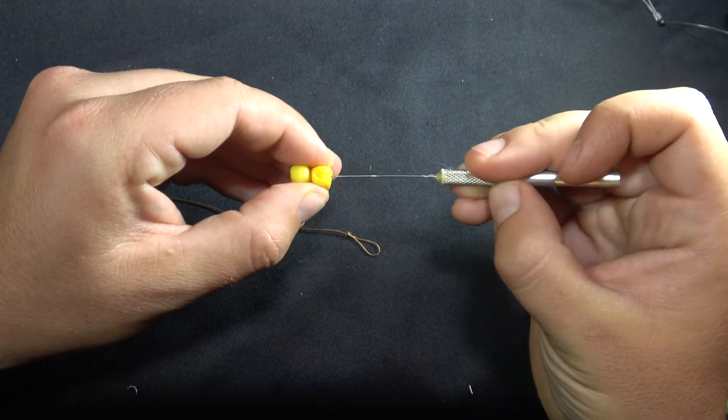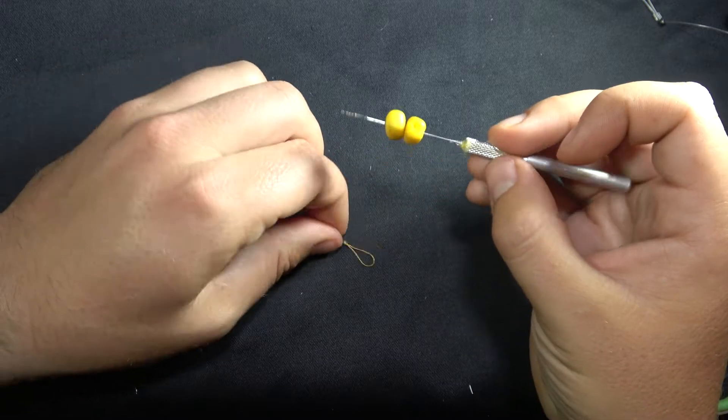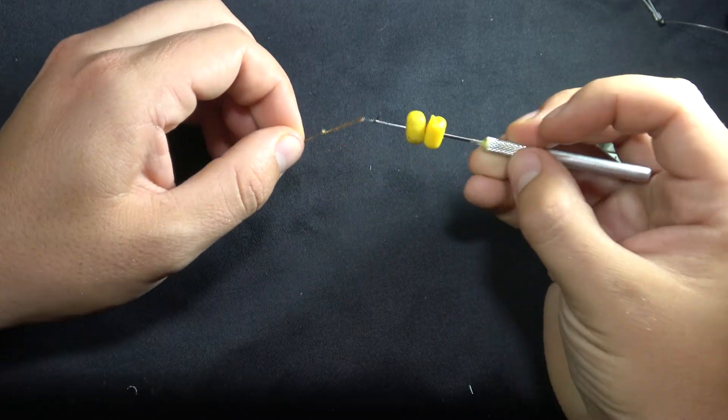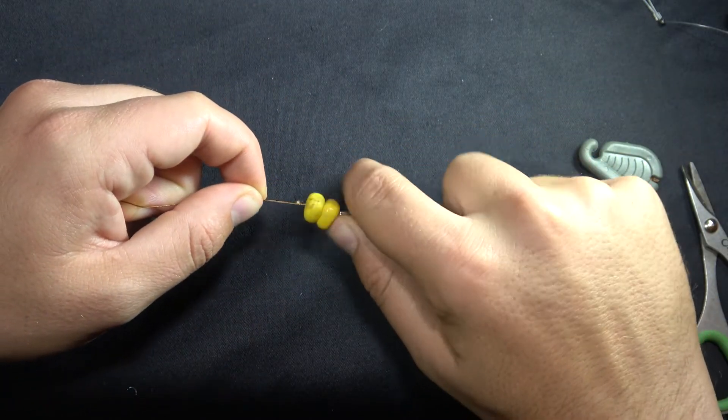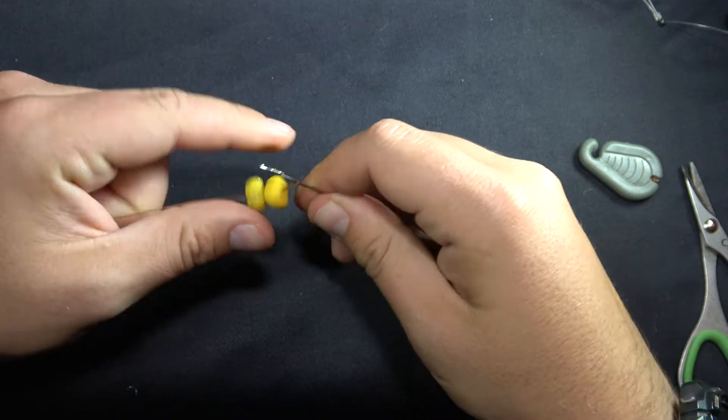Take your two fake maize and thread it onto your boilie needle. Now thread your fake maize onto your braid. Make sure to leave a loop for your hair stop.